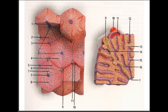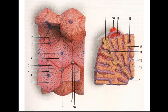These zones are a way we can functionally divide the liver based upon oxygen supply. Zone one encircles the portal tracks where oxygenated blood from the hepatic arteries enters. Zone three is located around the central veins where oxygenation is poor, and zone two is an in-between mix of zones one and three.